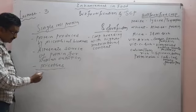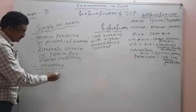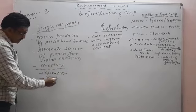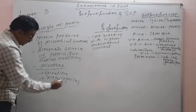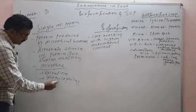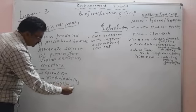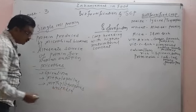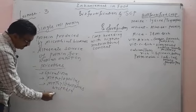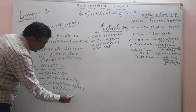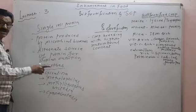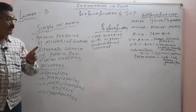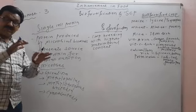The microbes generally used in the production of single-cell protein are Methylophilus methylotrophus bacteria and cyanobacteria.